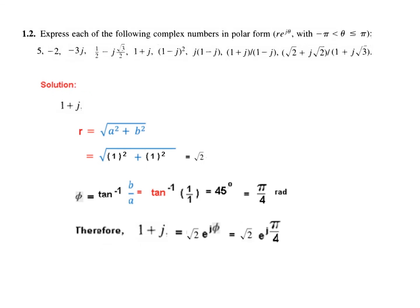The next question is 1 plus j, which is already in the form a plus jb. We plug in the values, get magnitude r equal to root 2, and calculate theta as pi by 4 radians. Therefore 1 plus j equals root 2 e raised to the power j pi by 4. This is the final answer.